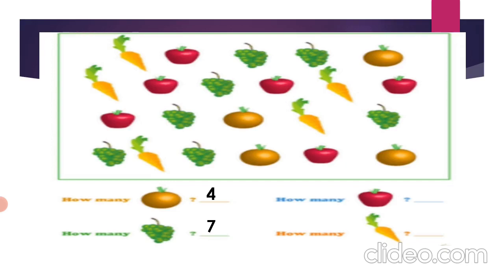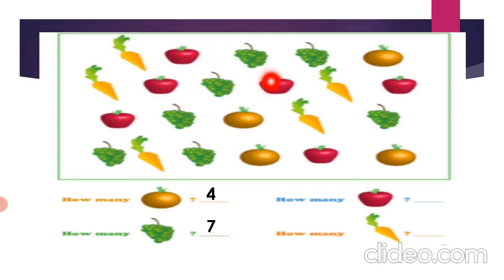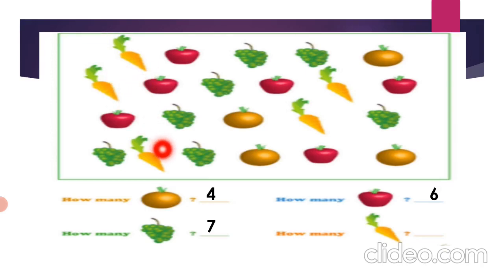Now next is apple. An apple a day keeps the doctor away! So let us count the apples: one, two, three, four, five, and six. So there are six apples. And at last there are some carrots given, so let us count the carrots: one, two, three, four, and five.